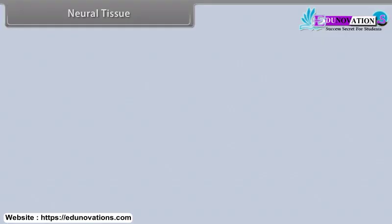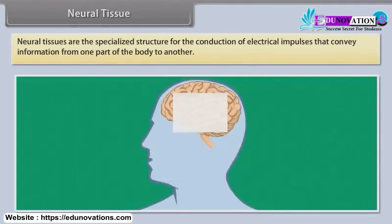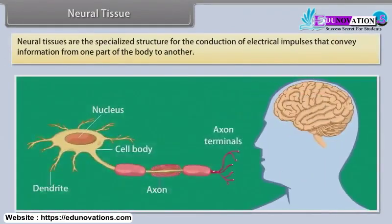Neural tissue. Neural tissues are specialized structures for the conduction of electrical impulses that convey information from one part of the body to another.